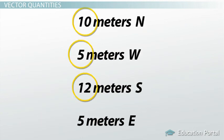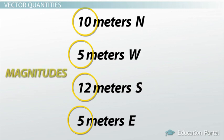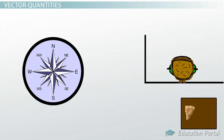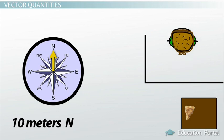10, 5, 12, and 5 are the magnitudes of the distances you needed to travel. North, south, east, and west provided the direction of travel. In this case, you needed both pieces of information to solve the problem and find the pie.